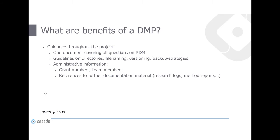Another benefit of DMPs is that they offer guidance throughout the project. You have one document that covers all questions concerning research data management. You can use it for laying out file naming conventions, versioning, and backup strategies — especially important in larger teams, to set up these rules before going into the field. DMPs can also contain administrative information like grant numbers and team member contact details, as well as references to further documentation.